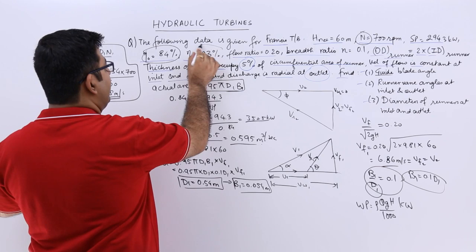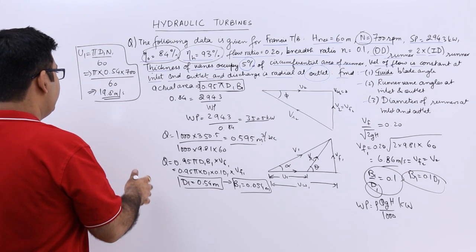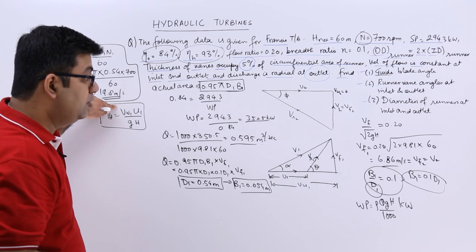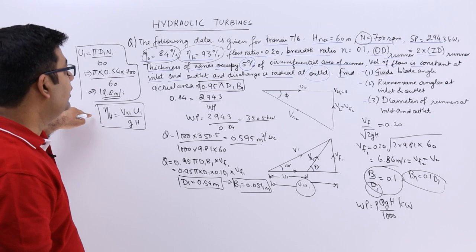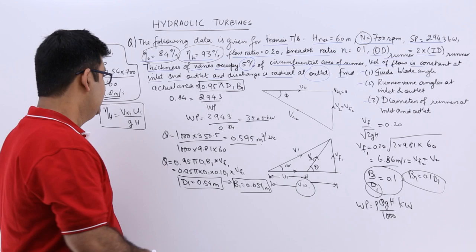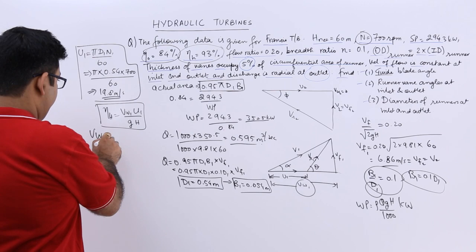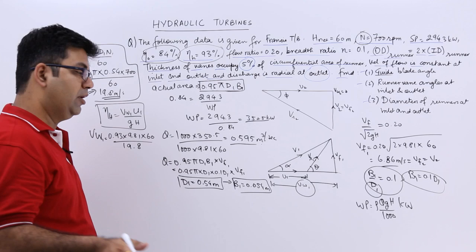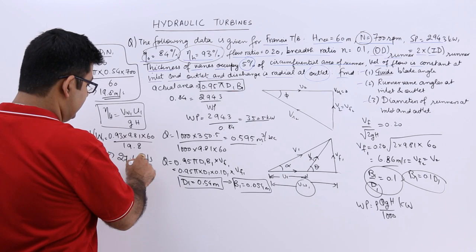Using hydraulic efficiency: η_h = VW1 × U1 / (g × H). So 0.93 = VW1 × U1 / (9.81 × 60). Rearranging: VW1 = 0.93 × 9.81 × 60 / 19.8, which gives VW1 = 27.66 meters per second.